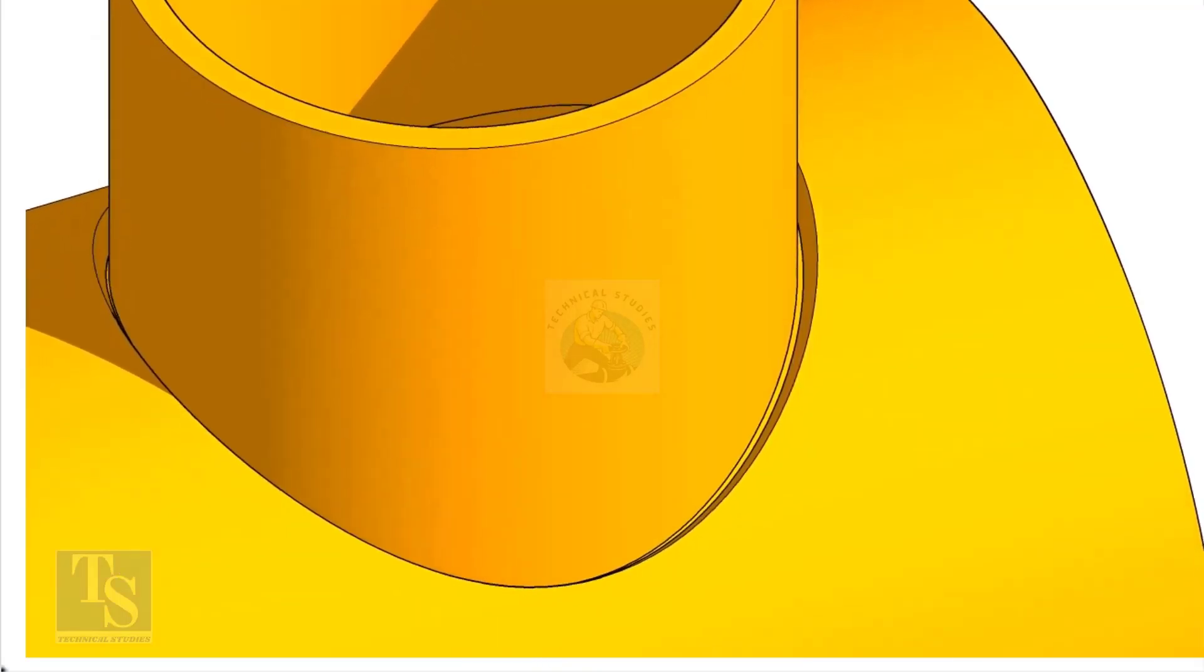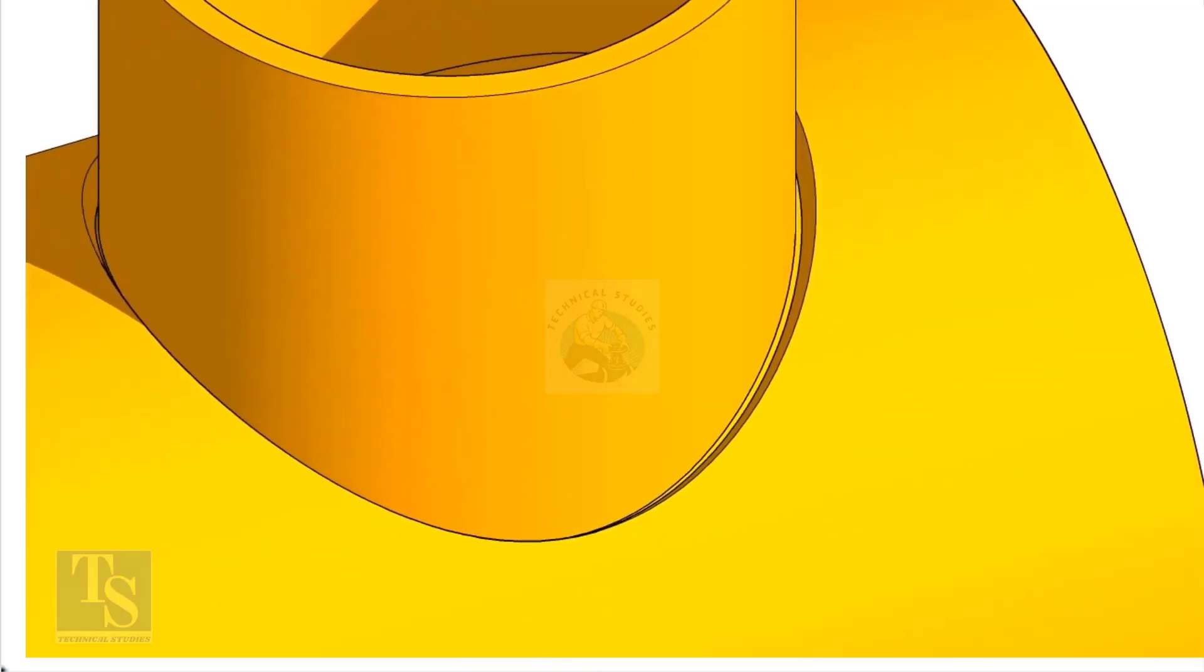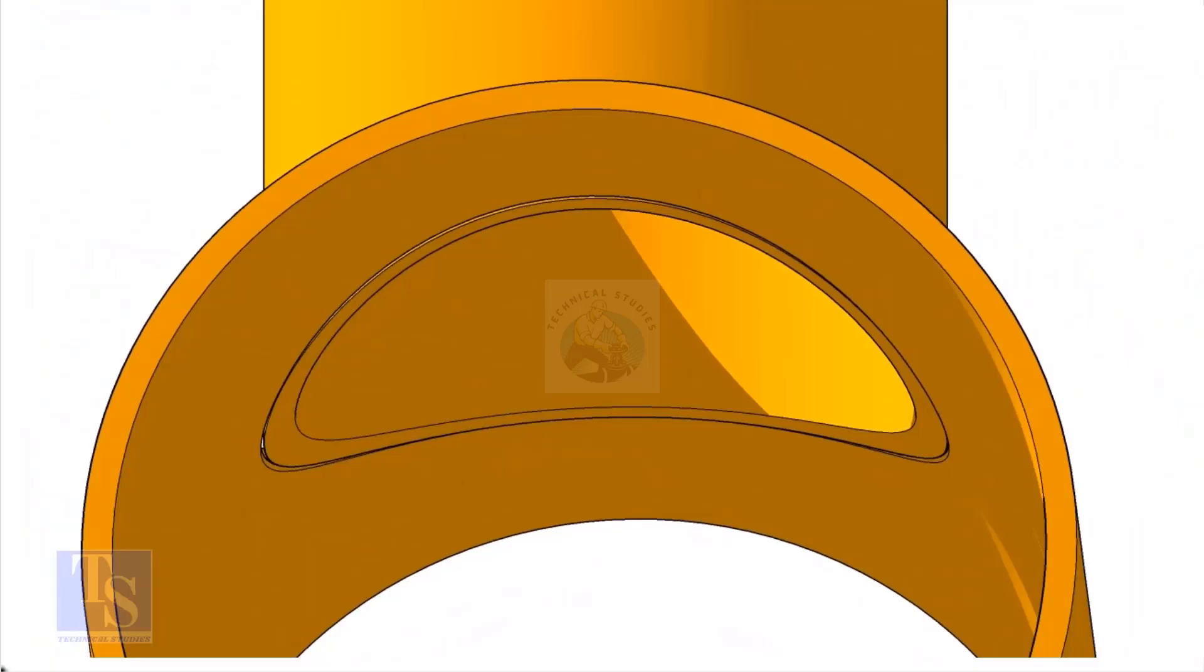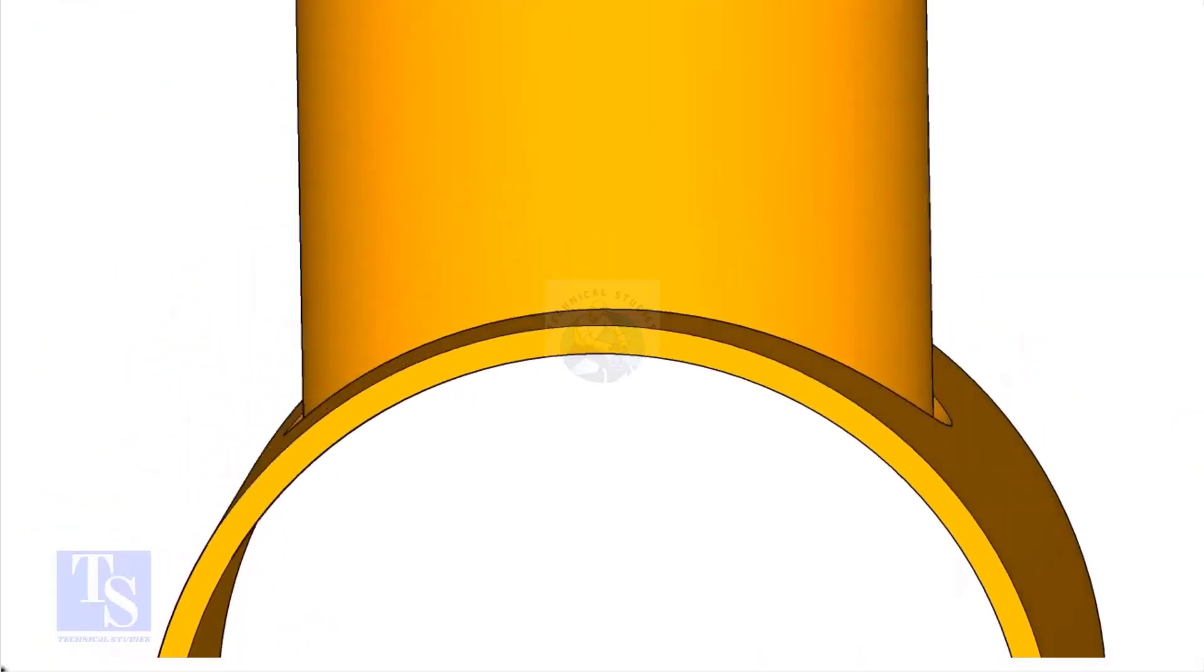On the branch pipe, there is no bevel preparation, but the cut-back cut is done. The end of the branch is level with the inside diameter of the header pipe.